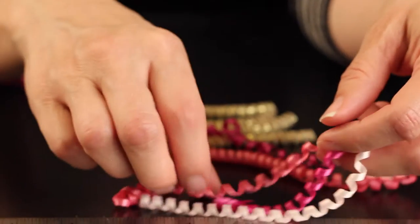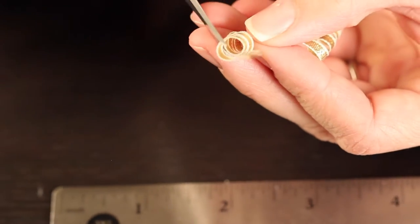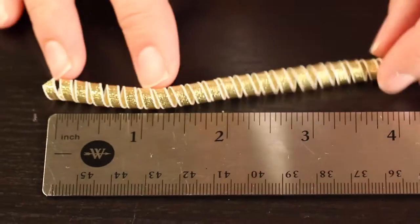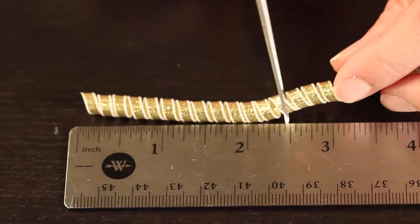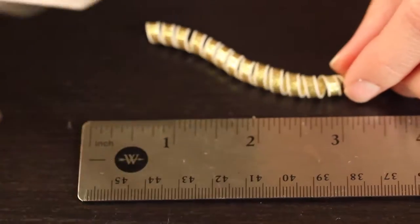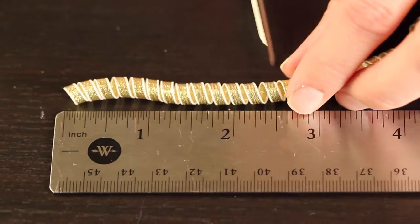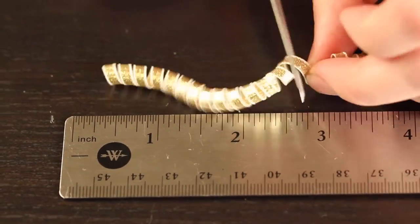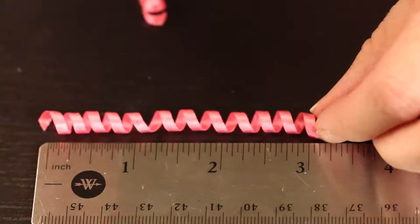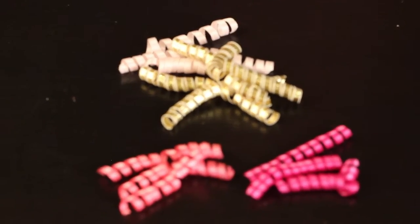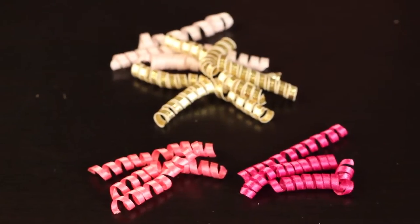So once you have your ribbon all curly and ready, trim off any weird ends off the end of your springy ribbon and measure them into two and a half inch pieces. So I did three gold, three dark pink, three medium pink, and three light.